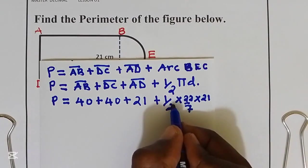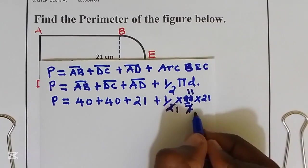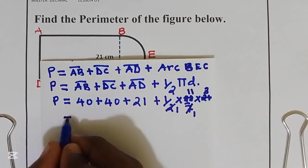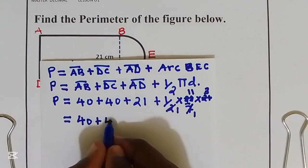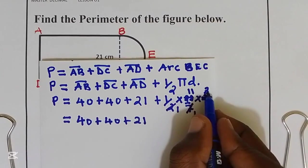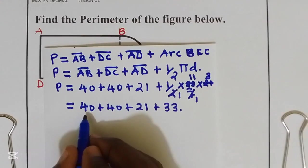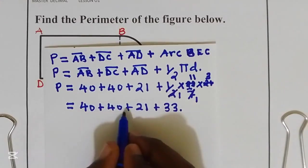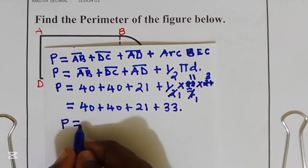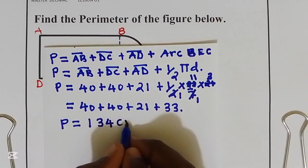We can simplify here by 2, we get 11, by 7 we get 3. This is equal to 40 plus 40 plus 21, 11 multiply by 3 we get 33. When we sum 40 plus 40 plus 21 plus 33, we get our perimeter is equal to 134 centimeters.